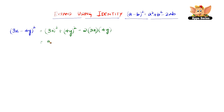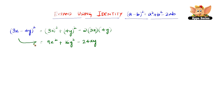(3x)² is 9x² because 3 × 3 = 9 and x × x = x², plus 4 × 4 = 16 and y × y = y², minus 2 × 3 = 6 and 6 × 4 = 24xy. So therefore, the expansion of (3x - 4y)² is 9x² + 16y² - 24xy.